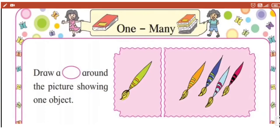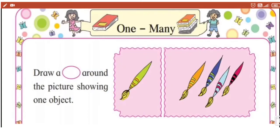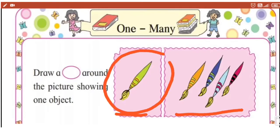What is this? This is a brush. What we have to do: we have to draw a circle around the picture showing one object. Which picture is showing one object? This picture is showing one object. We will draw the circle around this picture like this. You also draw in your textbook. Very good, very nice!